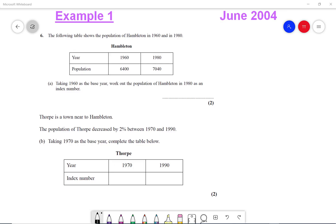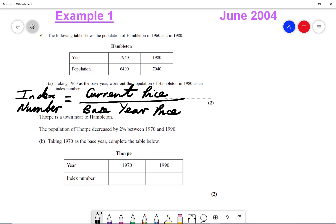So the first thing we need to do is load the formula for an index number. So the index number is going to be the current price over the base year price multiplied by 100.